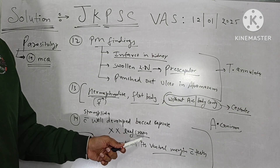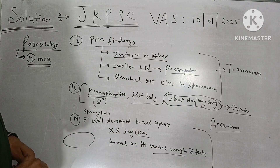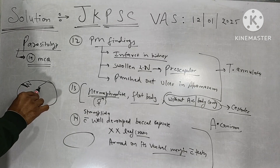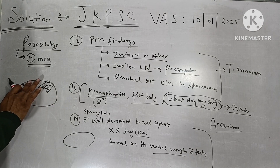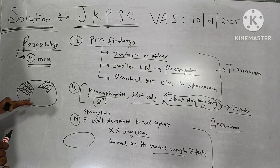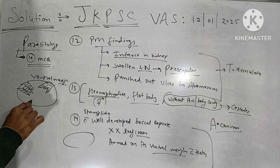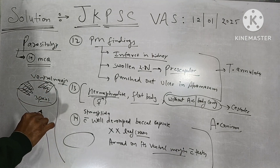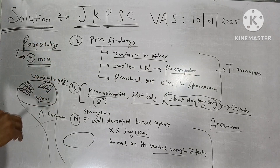Question 14 again involves morphology: a parasite devoid of a leaf crown — meaning leaf crowns are absent — and it has a ventral margin with teeth. There are three pairs of teeth on the ventral margin, and there is no leaf crown. So this is Ancylostoma caninum. These were the 14 MCQs asked from the parasitology portion.